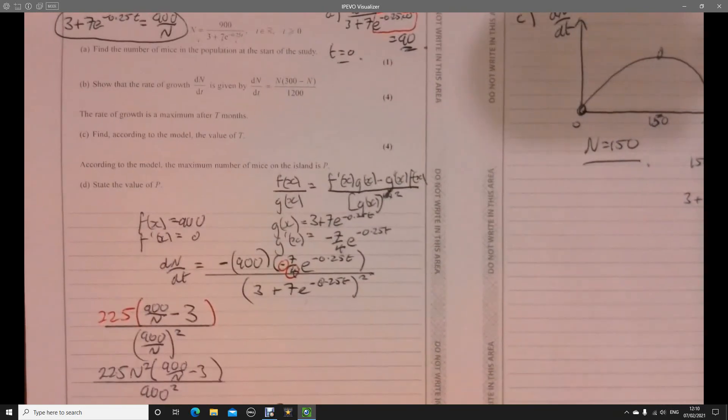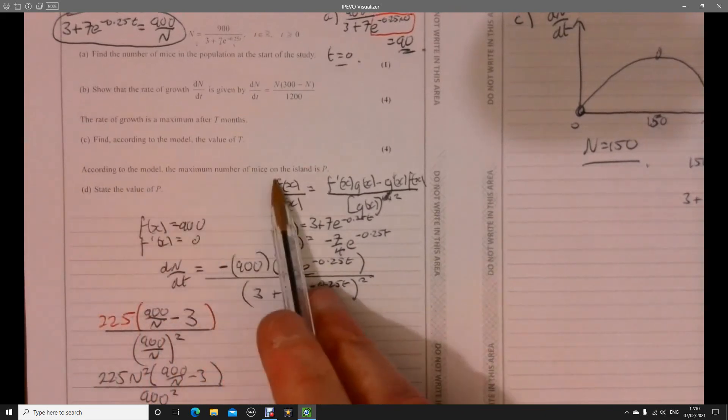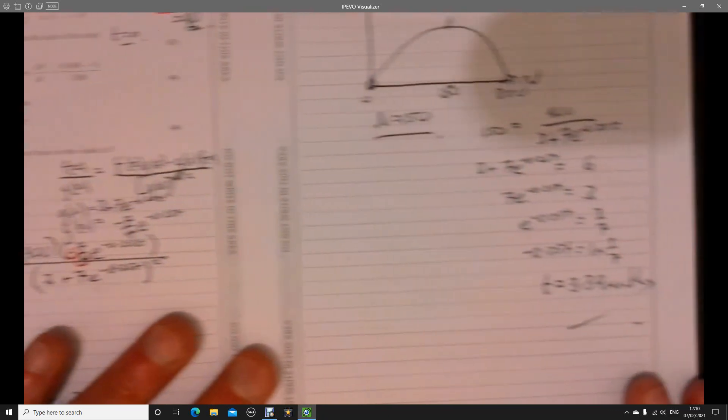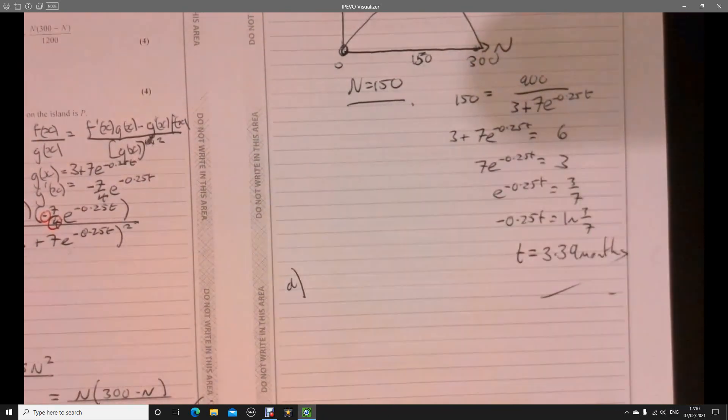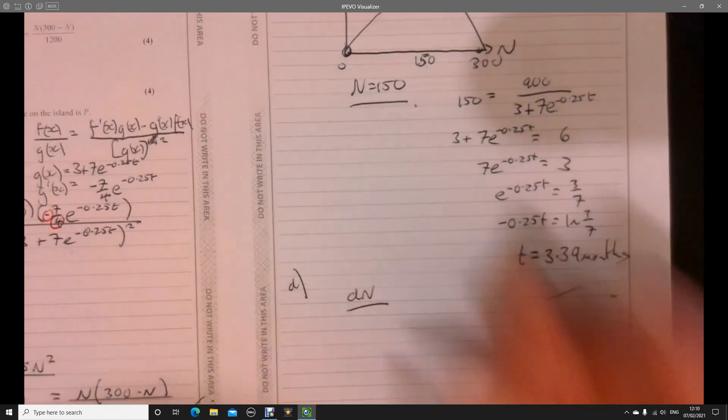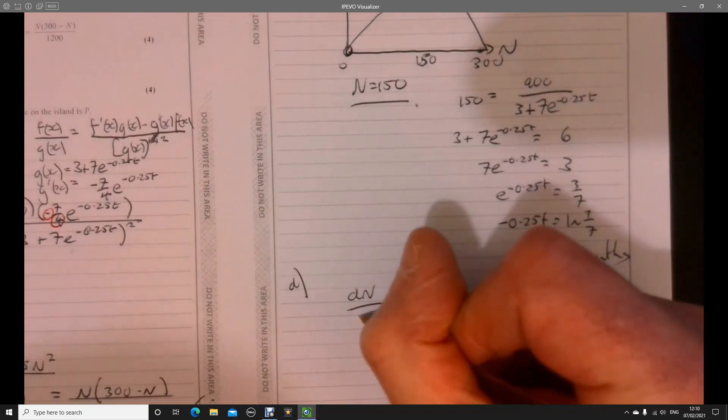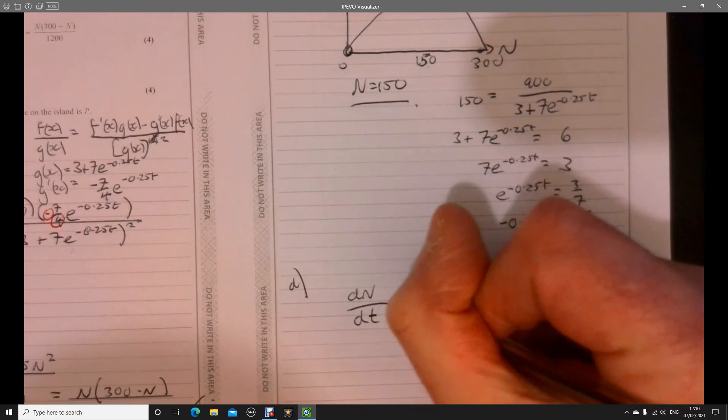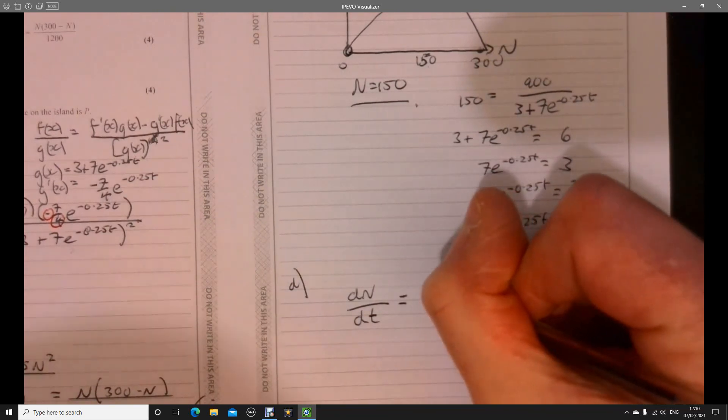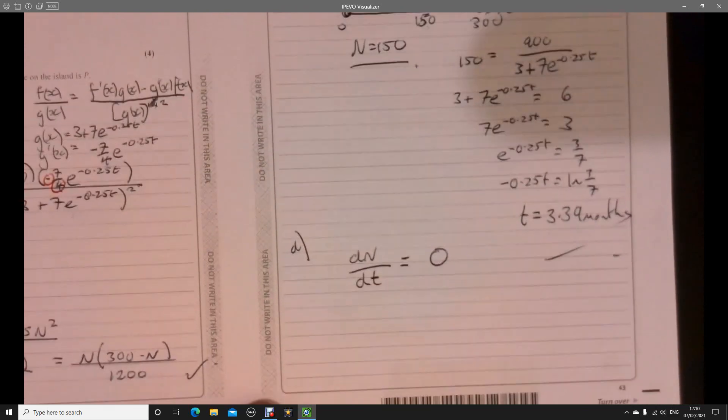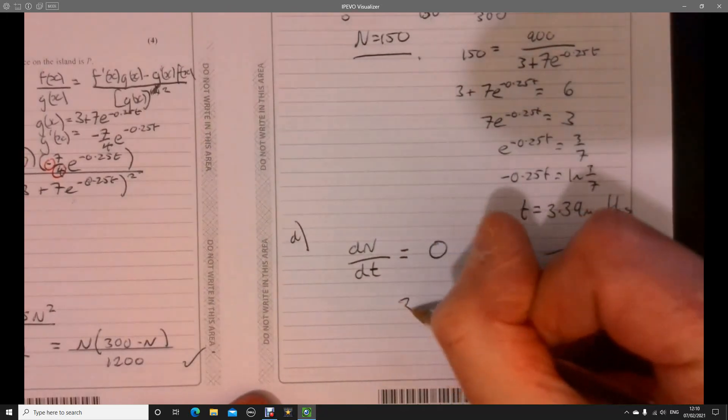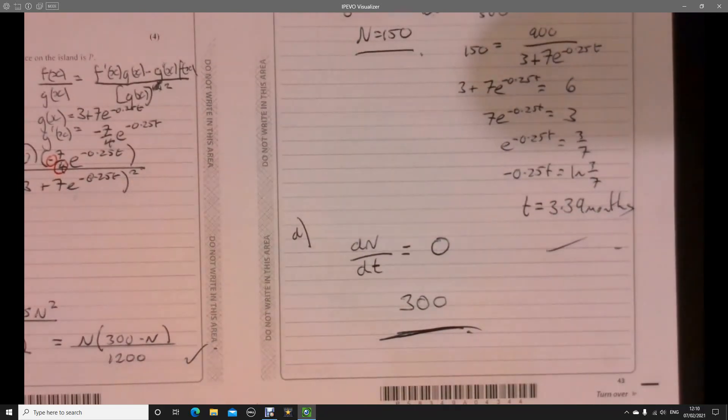The last bit of the question says, according to the model, the maximum number of mice on the island is P. So state the value of P. What's the maximum number of mice? In other words, that is when we should know about maximum points, that's going to be when our growth rate is going to be 0. So what are the roots of this again? 300. So it's when N is equal to 300, or P as it's referring to it here.